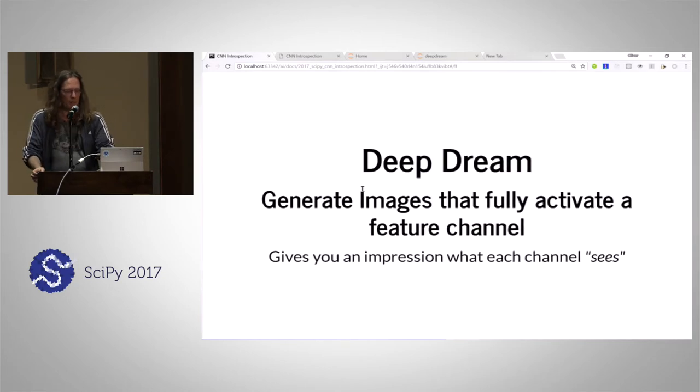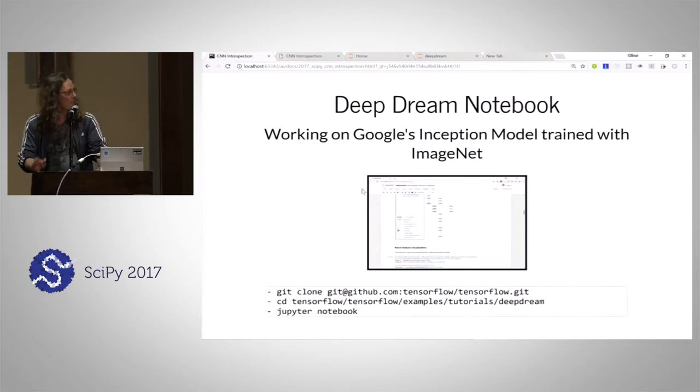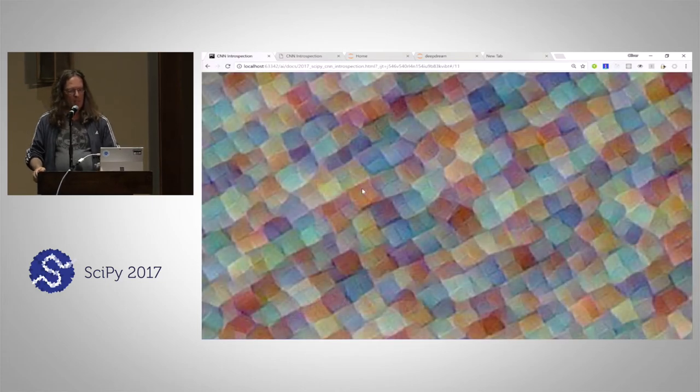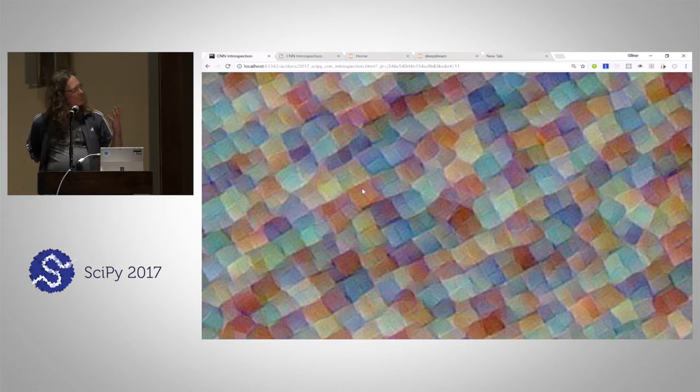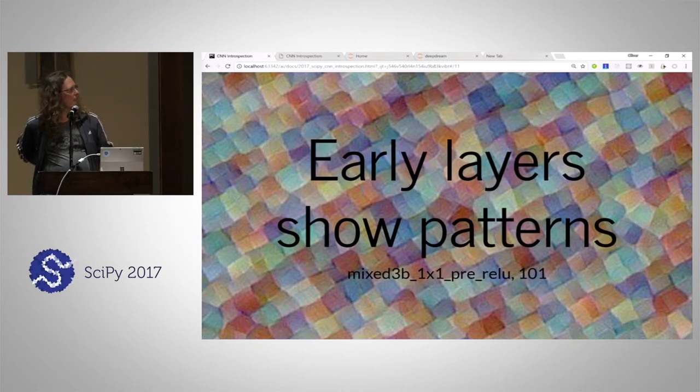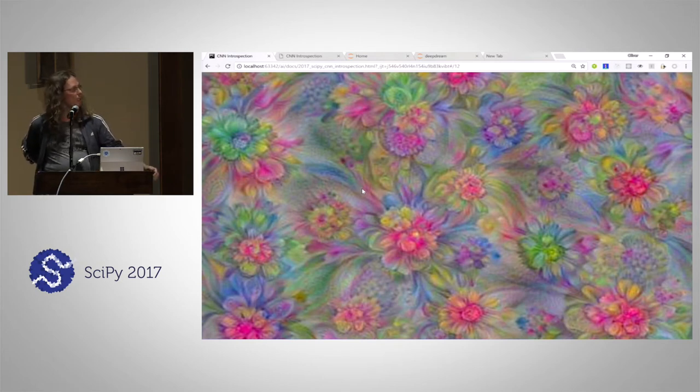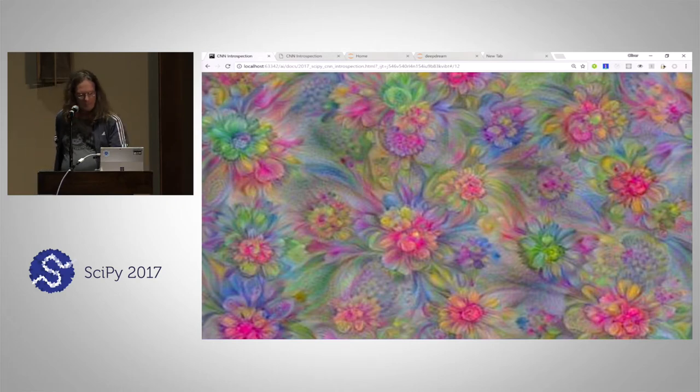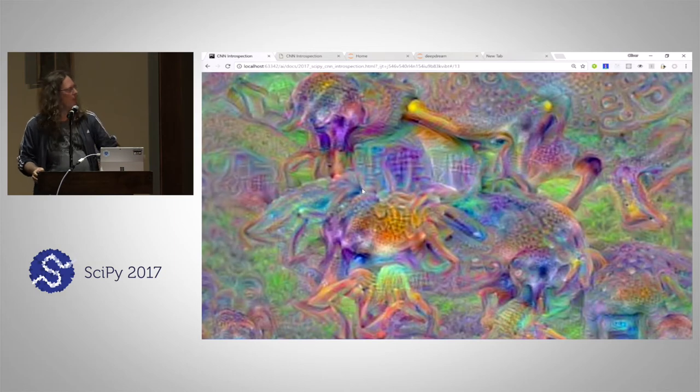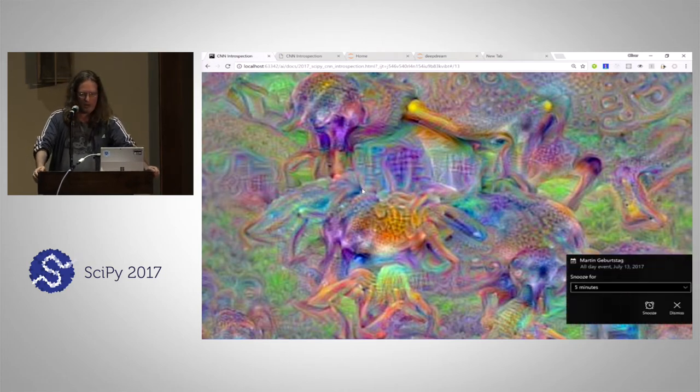This is the deep dream approach. The idea is to generate images by using gradient ascent to activate certain feature channels to a maximum. Doing this, you try to get an impression of what the network sees. This is something that the network sort of sees in a very early stage. It's just some patterns. In the next layer, you might see something like flowers. If you go down to final layers, you may actually find scary stuff. I have no idea what it is. It might be spiders going through houses.